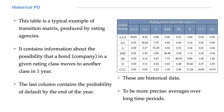Let's play for a moment. What is the probability that a B bond issue, or company to use the common terminology, defaults by the end of the year? This is 5.20%. And what is the probability that a AAA company will move to the A class by the end of the year? Simple: 0.68%.